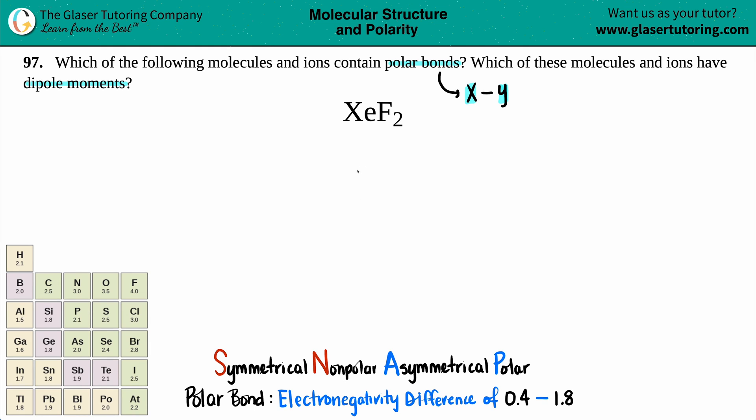So I'm going to start. Fluorine, never a central atom, because fluorine is the most electronegative element. Xenon has to be in the middle, surrounded by the two fluorines.